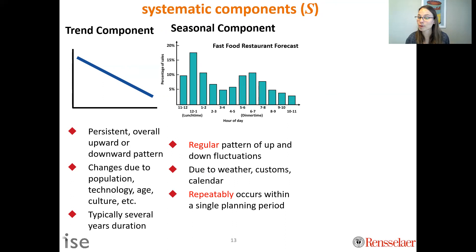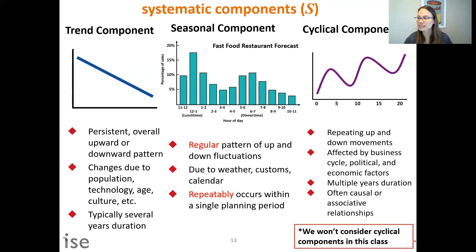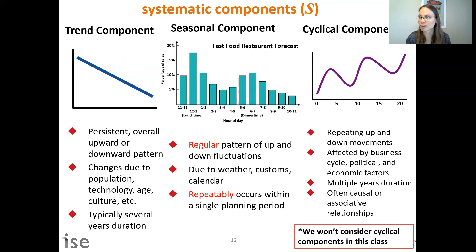The cyclical component is something outside our control, usually affected by business cycles — recessions, economic factors. In this class, we won't incorporate cyclical components in our models, but if you can identify and predict them, you'll likely have a more accurate forecast. These are all systematic components — the patterns we're hunting for in historical data, which we then estimate and combine to build a forecasting model.